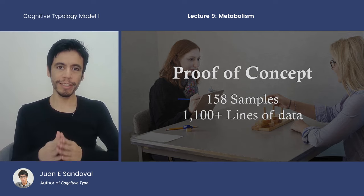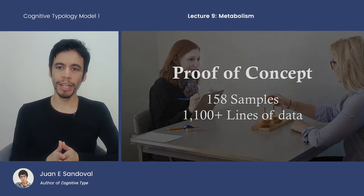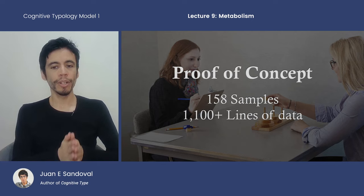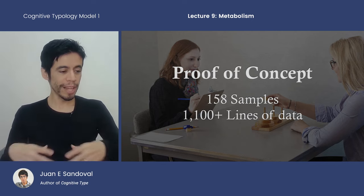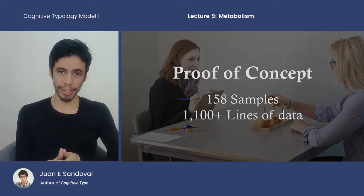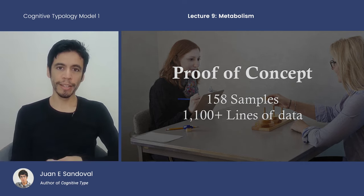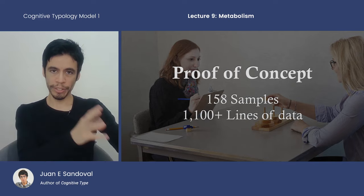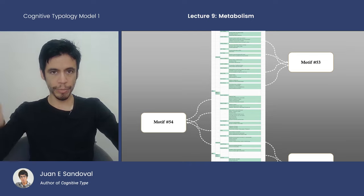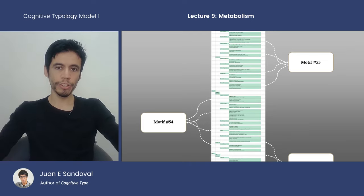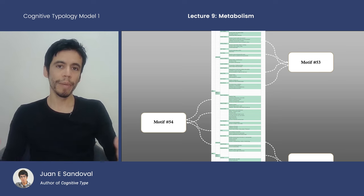The attempt made in this series of videos is what we might call a proof of concept. We've gone through a total of 158 samples and wrote down over 1,100 lines of data. All that comes together to show that there's a correlation between voltological clusterings and psychological clusterings, and you can see the motif clusterings that emerge and the symmetry within those structures.